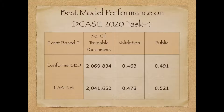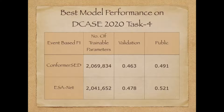Our experiments on DCASE 2020 Task 4 dataset showed that ESA-Net of similar complexity as the Conformer-SED consistently outperforms the latter, as seen across 20 random trials. More specifically, the best model obtained for ESA-Net is significantly better than the best Conformer-SED model, as shown in the table here, on both validation and public datasets.